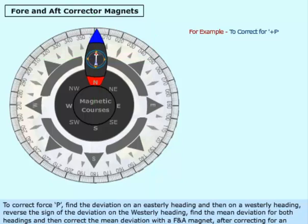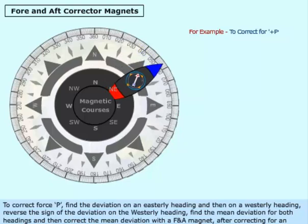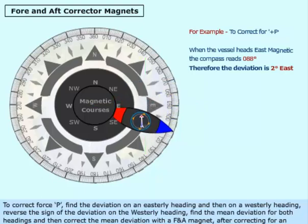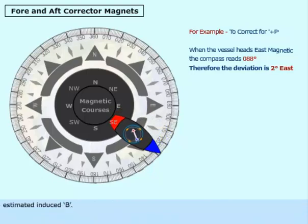To correct force P, find the deviation on an easterly heading and then on a westerly heading. Reverse the sign of the deviation on the westerly heading, find the mean deviation for both headings, and then correct the mean deviation with a F and A magnet after correcting for an estimated induced B.